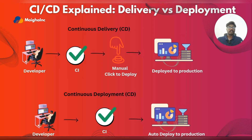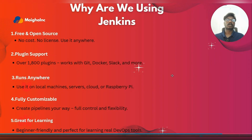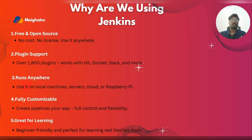So why use Jenkins? It's one of the most powerful and beginner-friendly CI/CD tools available. It's open source, easy to set up, and supports every language or tool you might use in DevOps. You can connect Jenkins with GitHub, Docker, testing tools — basically anything — using its huge plugin support. Whether you're running it on a laptop or a Raspberry Pi, Jenkins just works, giving you full control from simple build jobs to complex CI/CD pipelines.